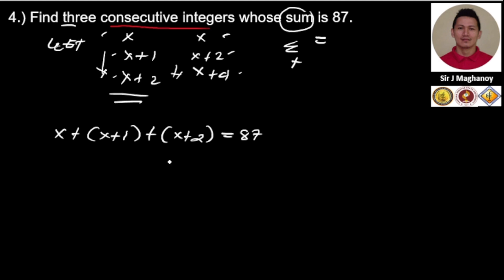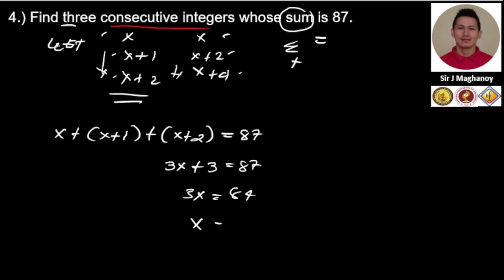Combining like terms, x plus x plus x gives 3x, and 1 plus 2 gives 3, so we have 3x plus 3 equals 87. Transposing 3 to the other side: 3x equals 87 minus 3, which is 84. Therefore x equals 84 over 3.